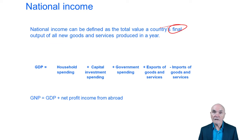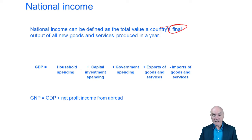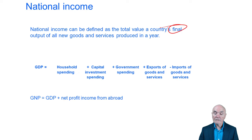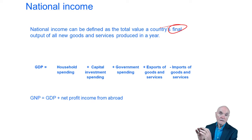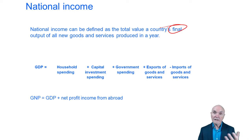There's also government spending — on wages for teachers, the armed services, new buildings, and building roads — which comes into national income. Exports are money coming in from abroad, while imports are money leaking out of the economy as it goes to foreign suppliers. This gives us Gross Domestic Product. Gross National Product is GDP plus profit income from abroad — so if a company has a foreign subsidiary that pays dividends, that becomes part of GNP.